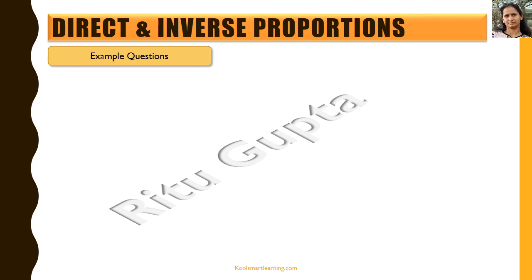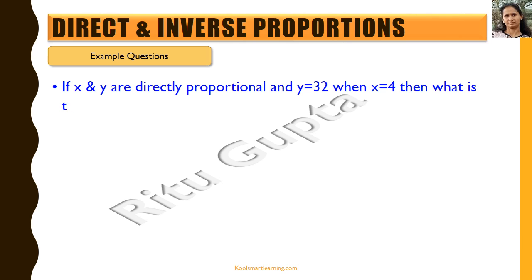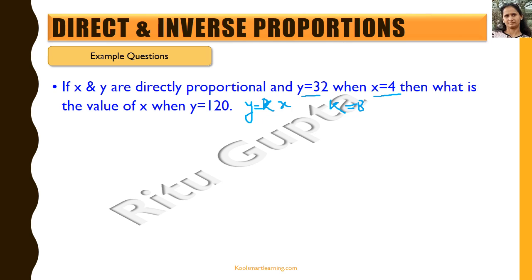Let's look at example questions using these proportionalities. If x and y are directly proportional and we are provided with values of x and y, we can find the proportionality constant. For instance, if y equals 32 and x equals 8, and we say y equals kx, then k equals 8. So if y equals 120, that gives 120 equals 8 times x, and x equals 120 by 8. That is how we find the value of the variable x.